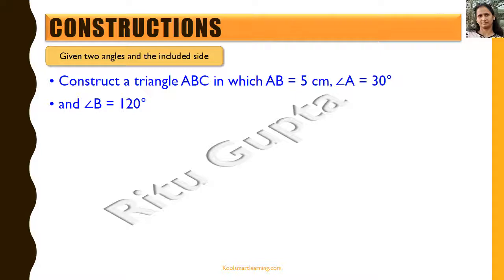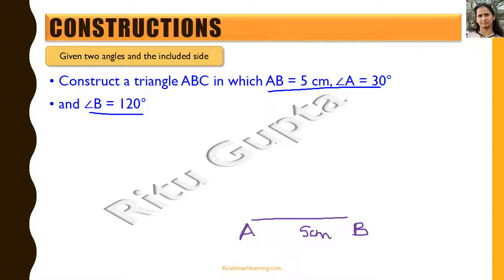Given two angles and an included side — the ASA criteria — we can construct a triangle. In this example, AB equals 5 cm, angle A equals 30 degrees, and angle B equals 120 degrees. We first take AB as the base and draw AB equal to 5 cm, then proceed to draw the required angles at each endpoint.